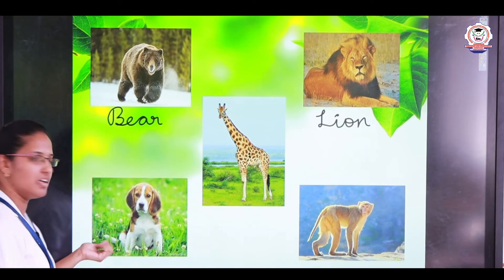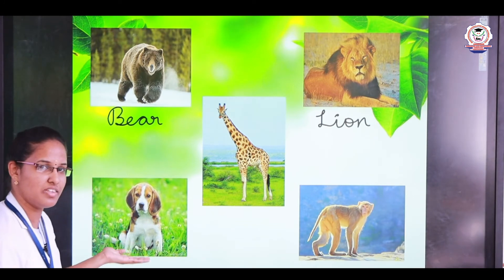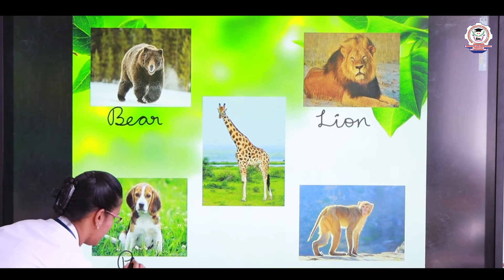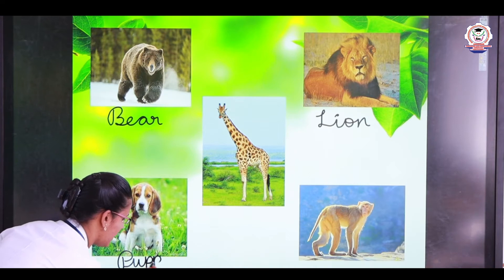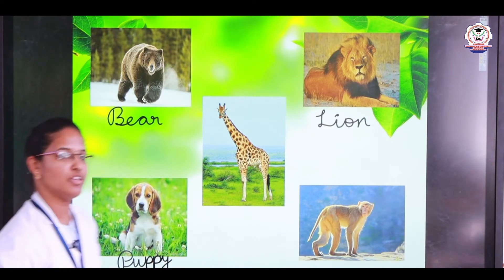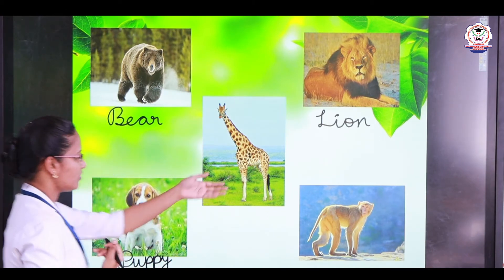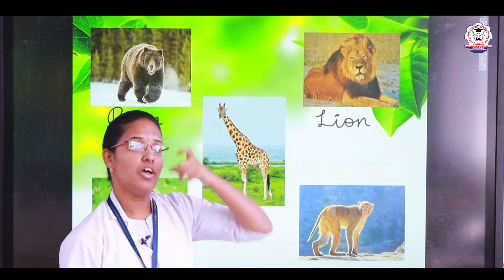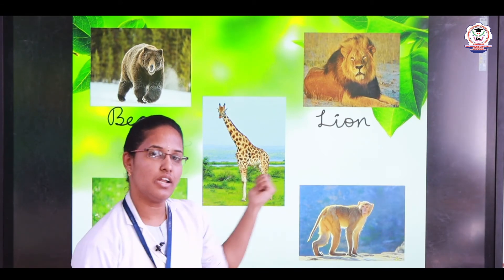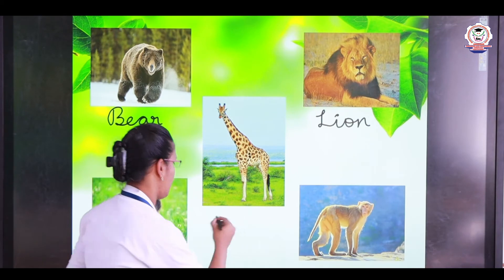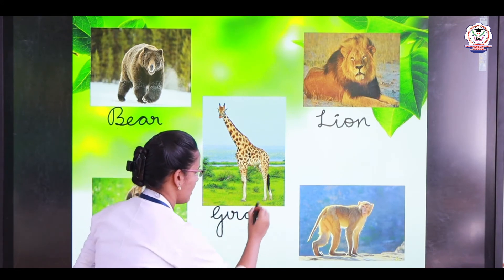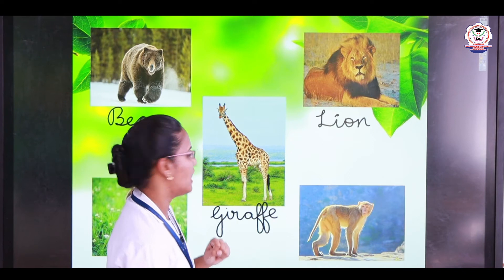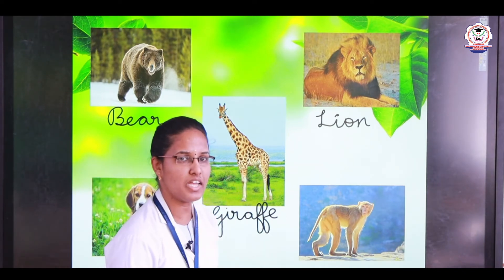The next animal — it is very cute to see — is a dog. The young one of a dog is called a puppy — P-U-P-P-Y. It is one of the pet animals we keep in our homes. Then what is this? It has a long neck and long legs — it is a giraffe. G-I-R-A-F-F-E. Giraffe has the longest tongue and its tongue is black. It is also one of the land animals.